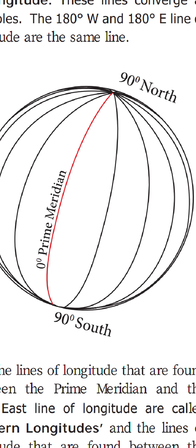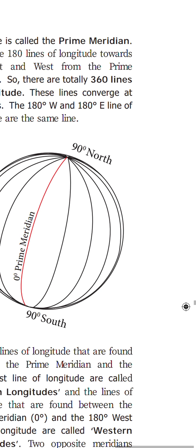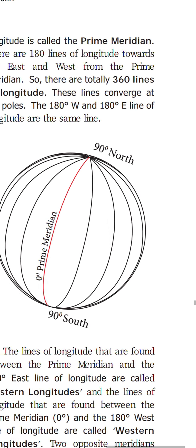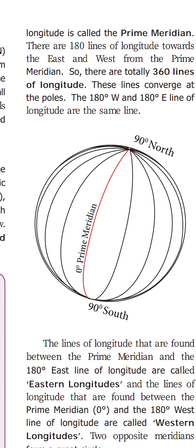There are 180 lines of longitude towards the east and 180 lines towards the west from the prime meridian. From zero degree prime meridian, if you move towards the east you have 180 lines; towards the west you also have 180 lines. So there are totally 360 lines of longitude.